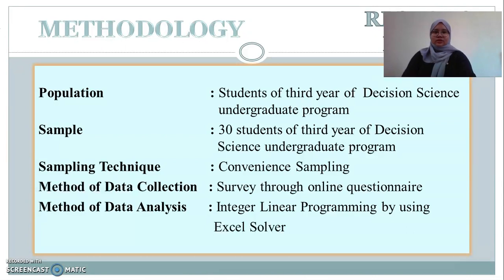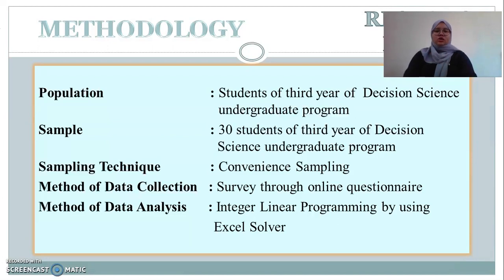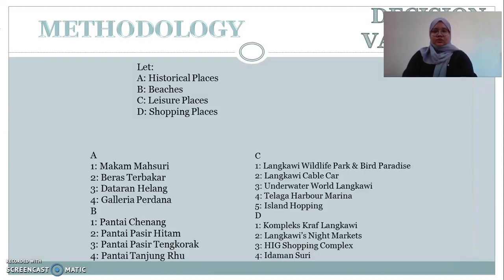As for the research design, our population of study consists of third-year undergraduate students of the Quantitative Science degree program. We used convenience sampling techniques to select 30 students. For data collection, we conducted a survey using an online questionnaire via Google Forms, and we analyzed the data using Excel Solver.